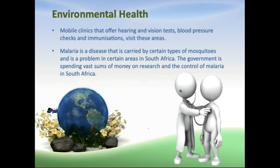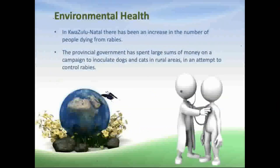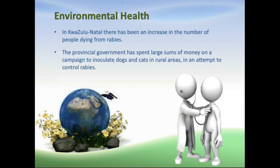Malaria is a disease that is carried by certain types of mosquitoes and is a problem in certain areas in South Africa. In KwaZulu-Natal, there has been an increase in the number of people dying from rabies. The provincial government has spent large sums of money on a campaign to inoculate dogs and cats in rural areas in an attempt to control rabies.